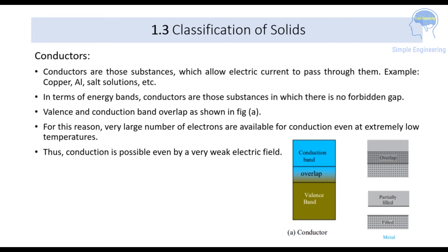Conductors are substances which allow electric current to pass through them. Examples include copper, aluminum, and salt solutions — all these are conductors because they allow electric current to pass through them. In terms of energy bands, conductors are substances in which there is no forbidden energy gap.